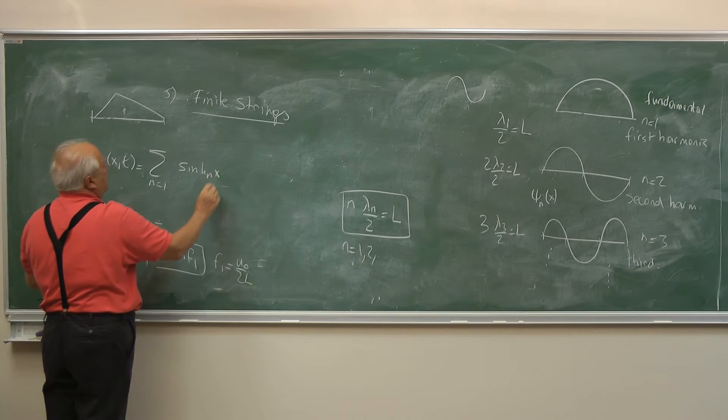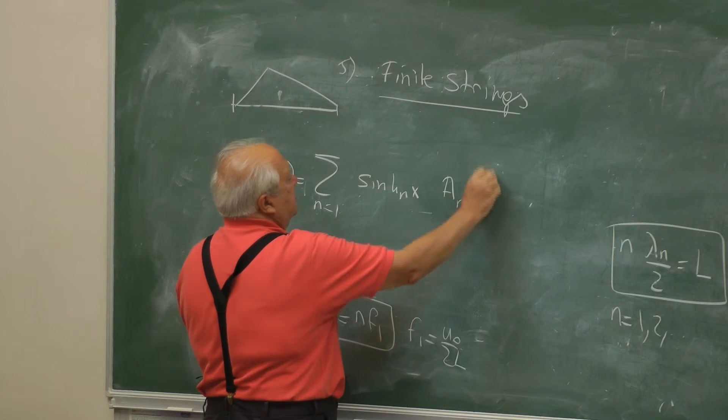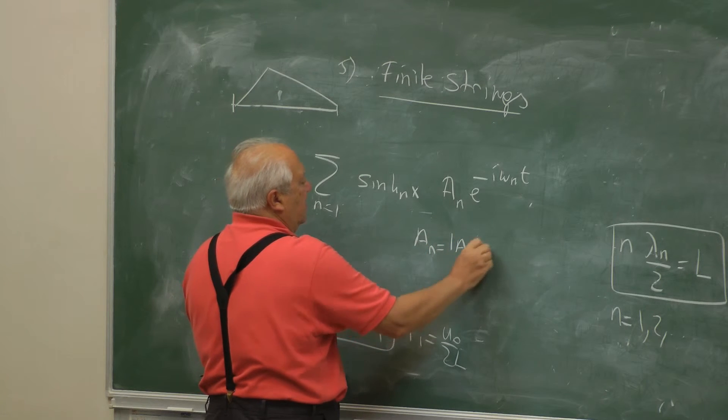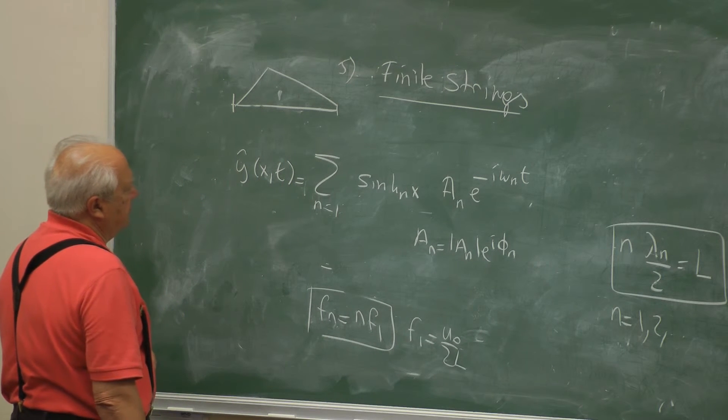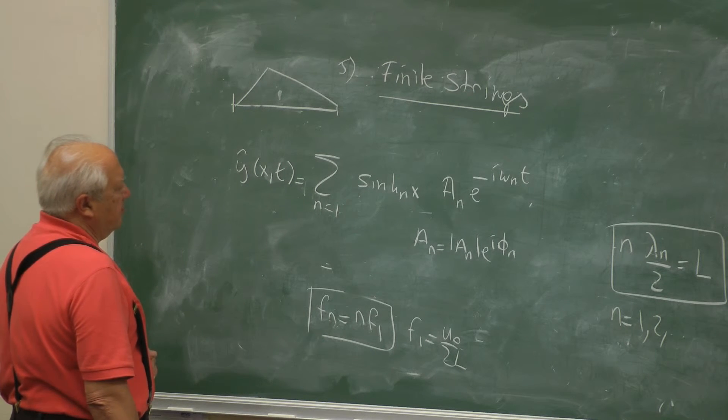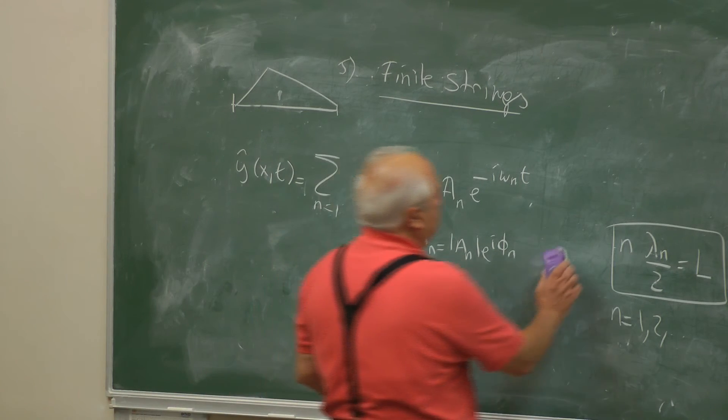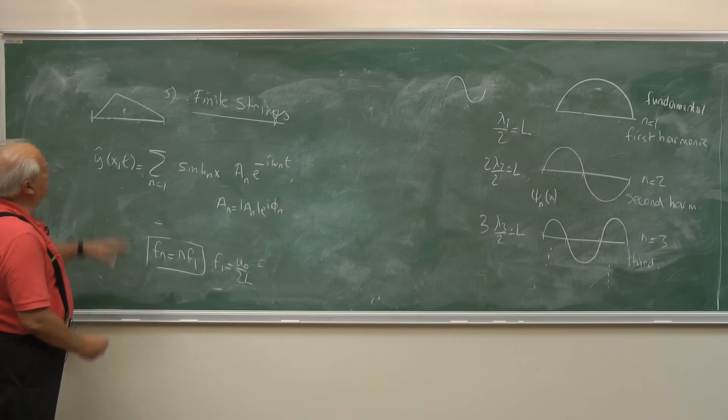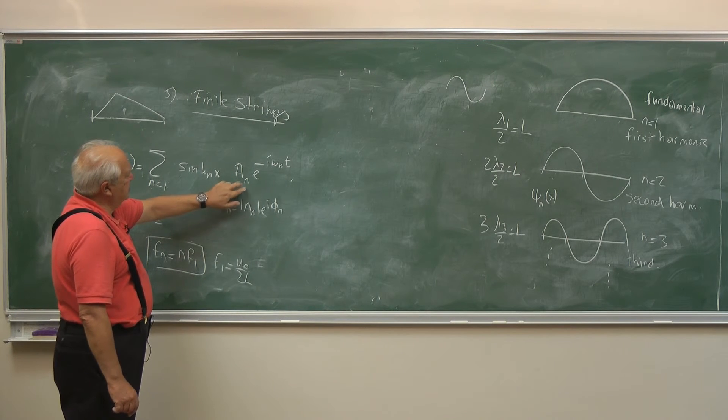So what happens is that the general solution is a superposition: sum over n of sin(kₙx), and I will take even complex Aₙe^(-iωₙt). Aₙ is some magnitude times the phase, a complex coefficient.